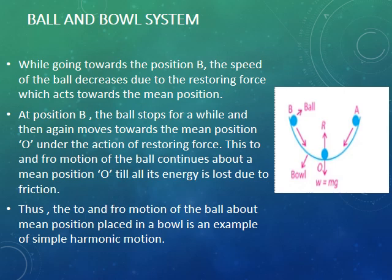Thus, the to-and-fro motion of a ball about mean position in a bowl is an example of simple harmonic motion. Basically, we have three positions: position O, position A, and B. O is the mean position; A and B are the extreme positions. Body moves towards the extreme position due to inertia, and body moves towards the mean position due to the restoring force.